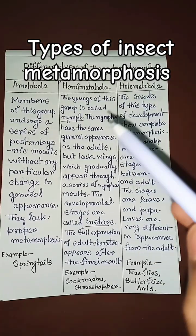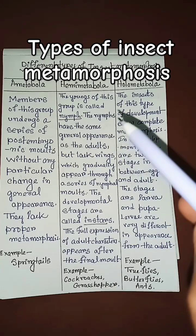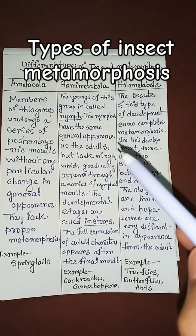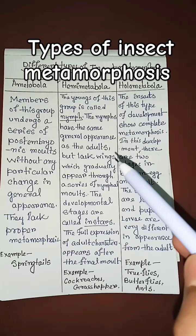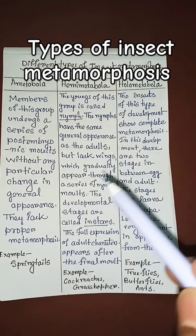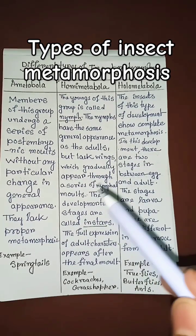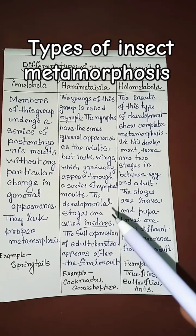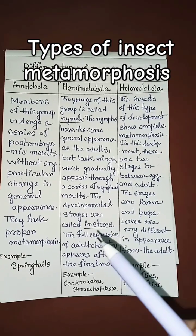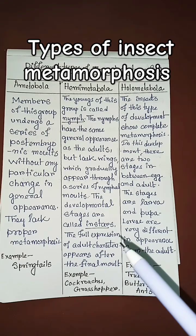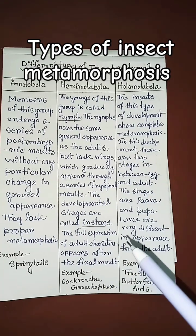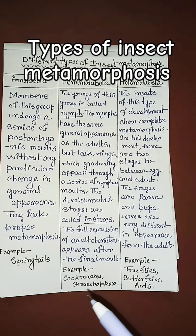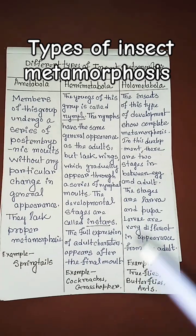Hemimetabola: the young of this group are called nymphs. The nymphs have the same general appearance as the adults but lack wings, which gradually appear through a series of nymphal molts. The developmental stages are called instars. The full expression of adult characters appears after the final molt. Examples: cockroaches, grasshopper.